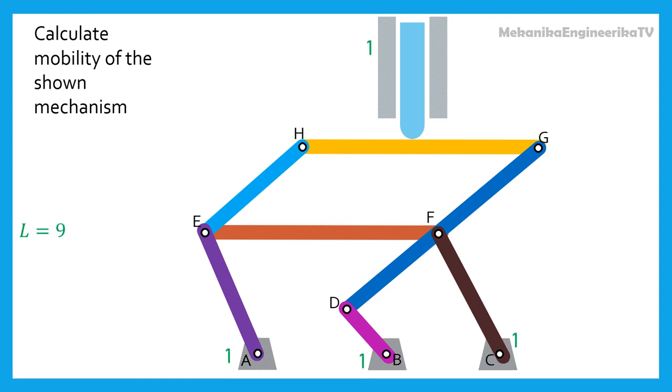The ground, Bar BD, Bar AE, Bar CF, Bar DFG, Bar EF, Bar EH, Bar HG, and the follower rod.